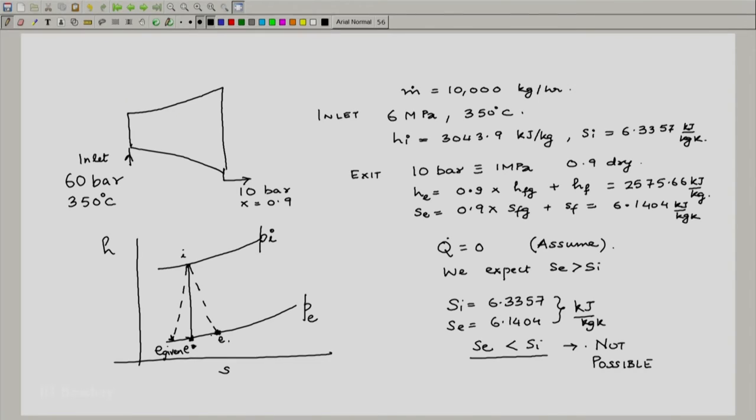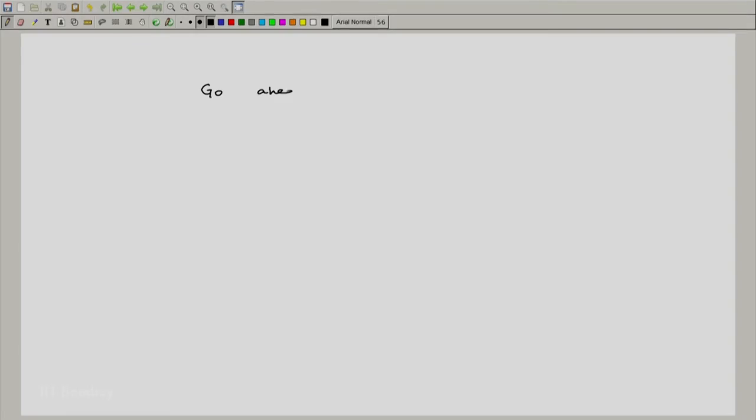What would have been possible is if exit e was equal to e star or greater than e star. So, let us go ahead with our calculations assuming that we get s e equal to s i, that is our ideal exit state. In this case go ahead assuming s e equal to s i, which means e equal to e star. We know what s is here, so let us find out that s e is also equal to 6.3357 kilojoule per kg Kelvin.